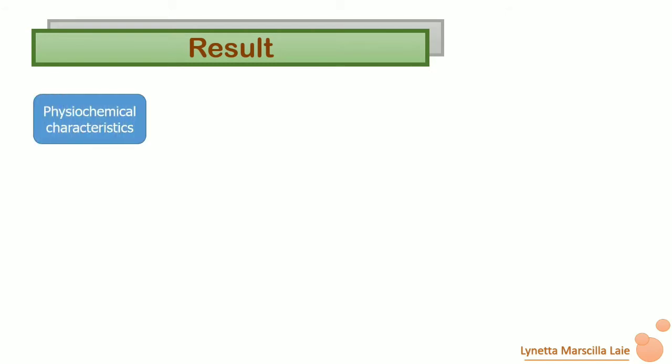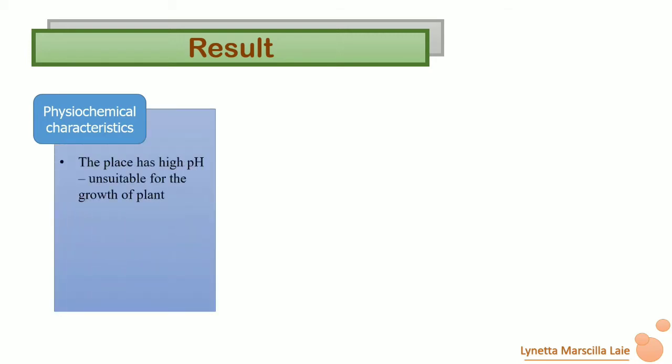Next are the results of the experiment. The samples were tested for physicochemical characteristics such as pH, dissolved oxygen, alkalinity, and total water content for older and fresh slag. The results show that the site has a high pH and is therefore unsuitable for crop growth. The oldest slag has higher dissolved oxygen and is more alkaline compared to the fresh slag.